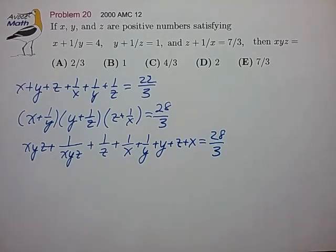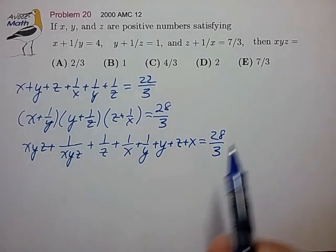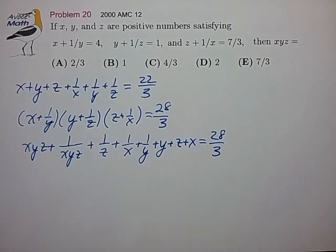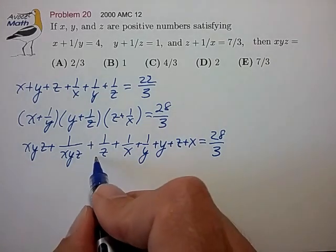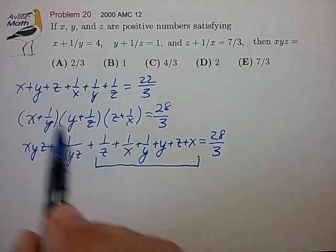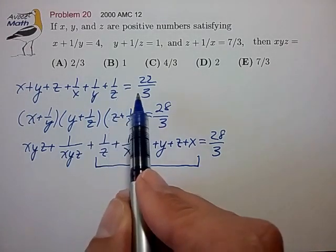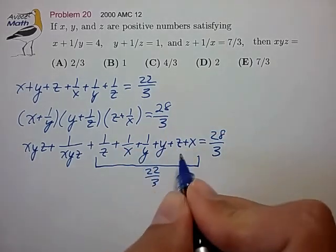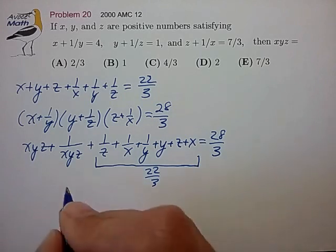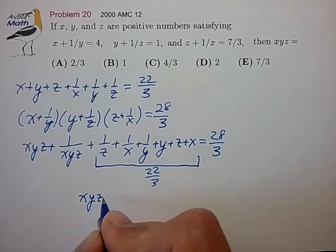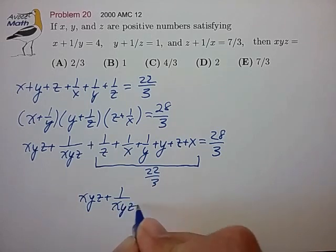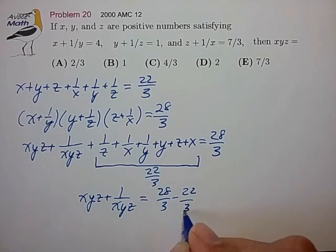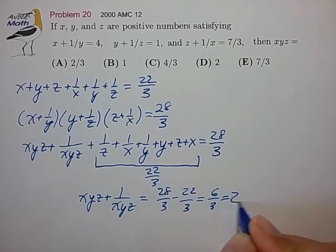So now we're in really good shape. We have terms that match the target expression, and we also have some other symmetries that also match the desired symmetry of the target expression. In fact, we've actually generated terms that match the very first equation. So this allows for very obvious substitution. We can substitute 22 over 3 for this group of terms to find that x, y, z plus 1 over x, y, z is equal to 28 over 3 minus 22 over 3. That's 6 over 3, which is equal to 2.